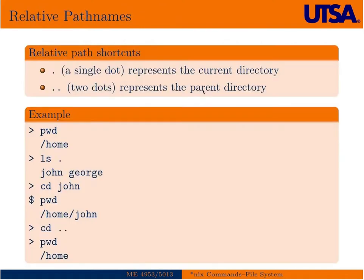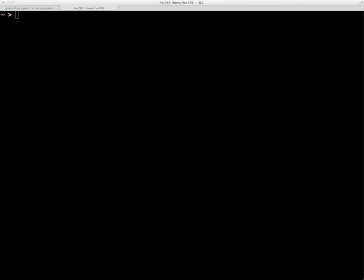We've talked a bit about this before, but just to reiterate: we can have absolute paths, where we define a path from root, but we can also have relative paths. Relative paths can be indicated by a single dot, meaning the current directory, and two dots meaning the parent directory. Let's go to the terminal and show an example.